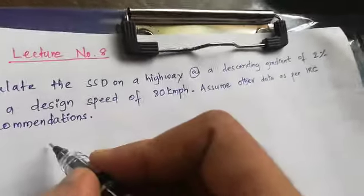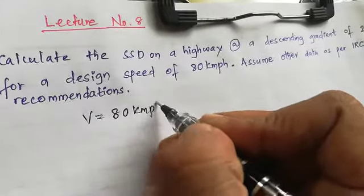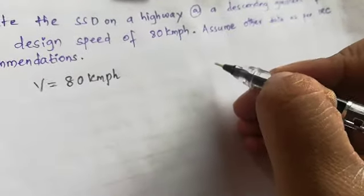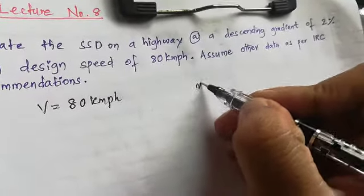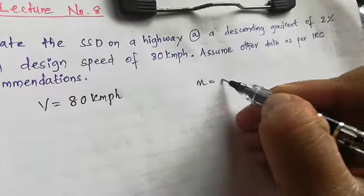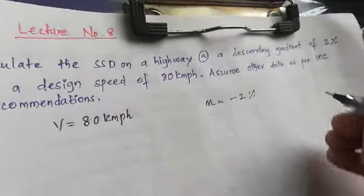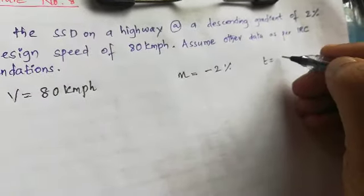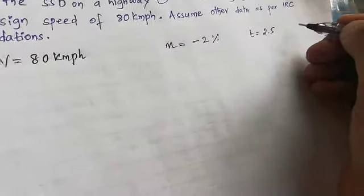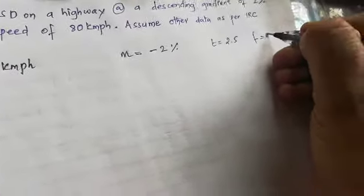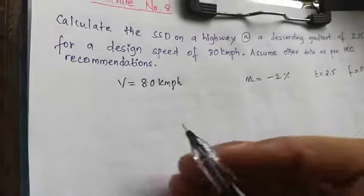So what is given: speed, and gradient as a descending gradient, so that is minus 2%. You know the reaction time is going to be 2.5 seconds for stopping sight distance, and coefficient of friction for 80 kmph we take as around 0.35.